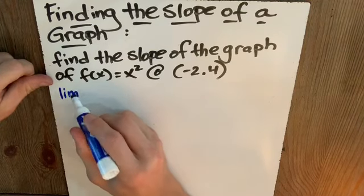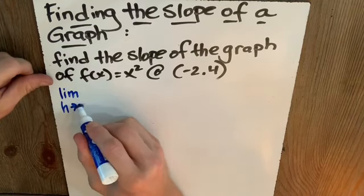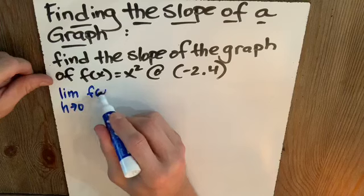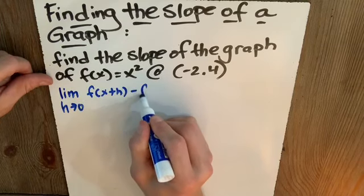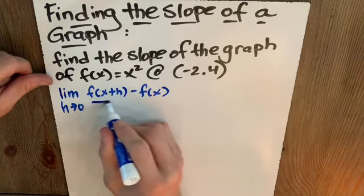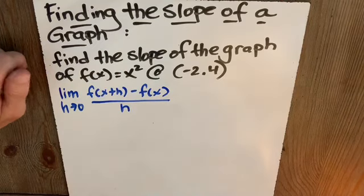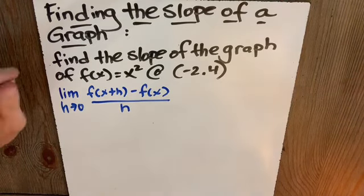We know that's the limit as h approaches zero of f of x plus h minus f of x. That's y2 minus y1 over the x is canceled out in the wash to leave us just with h.